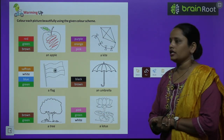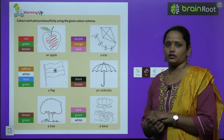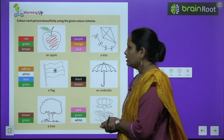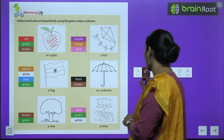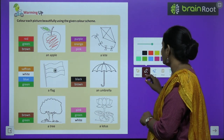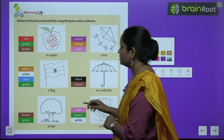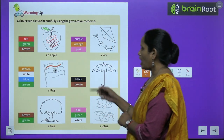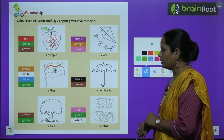Similarly, you have to colour this kite using purple, orange, and pink — you can fill those colours in anywhere. Next, you have to fill this flag, and for this flag you have to fill saffron colour here.